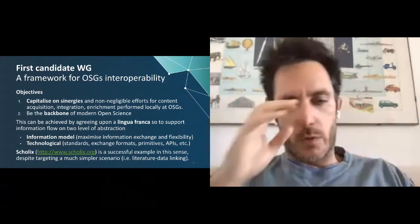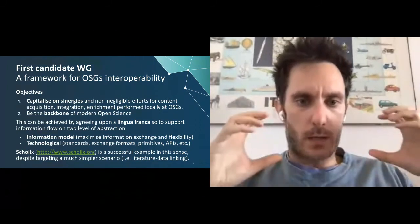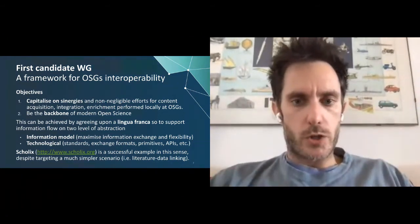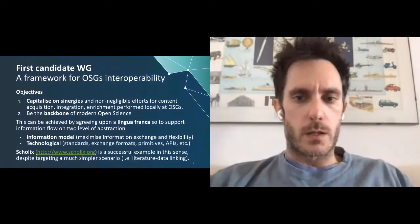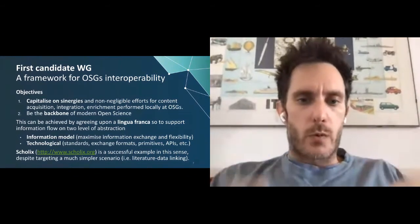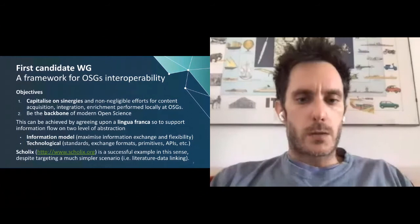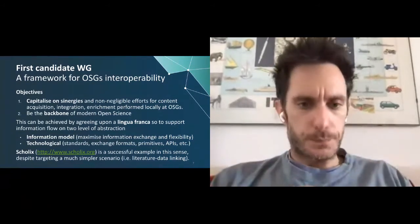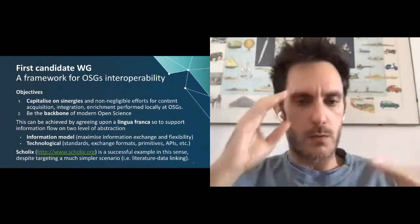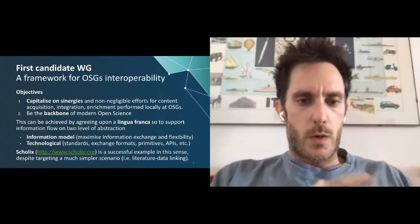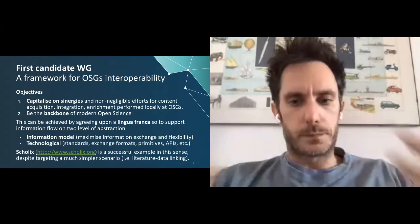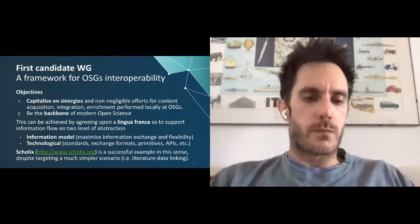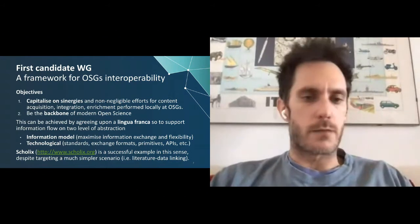The first candidate priority for the working group transition is interoperability. The objectives are mainly to capitalize on synergies, avoid performing the same operations over and over again locally across different initiatives, and to establish OSGs as the backbone of modern open science scholarly communication. This can be achieved by agreeing on a lingua franca to support seamless information flow, at two levels: the information model and the technological implementation.